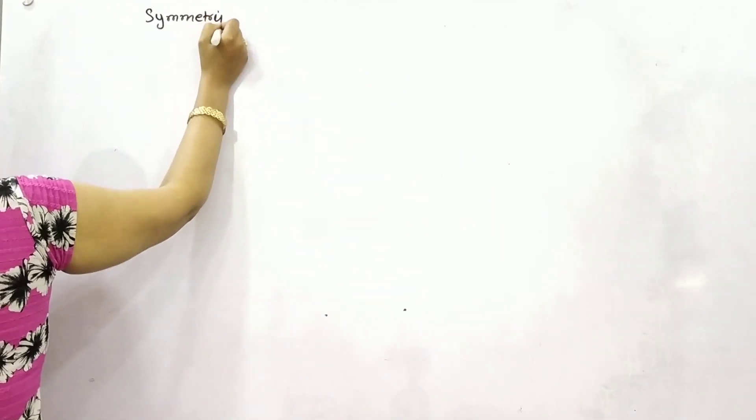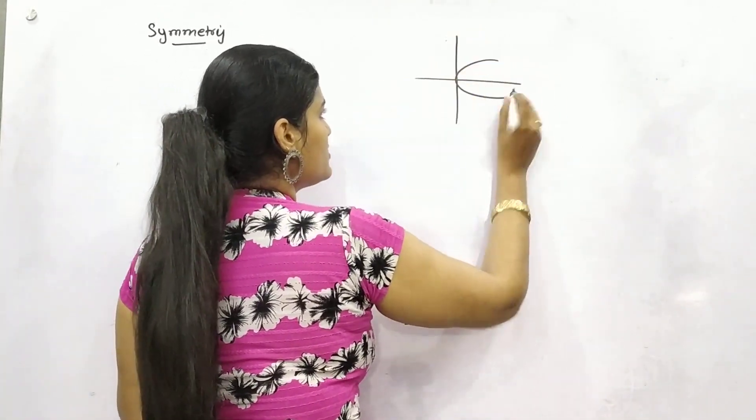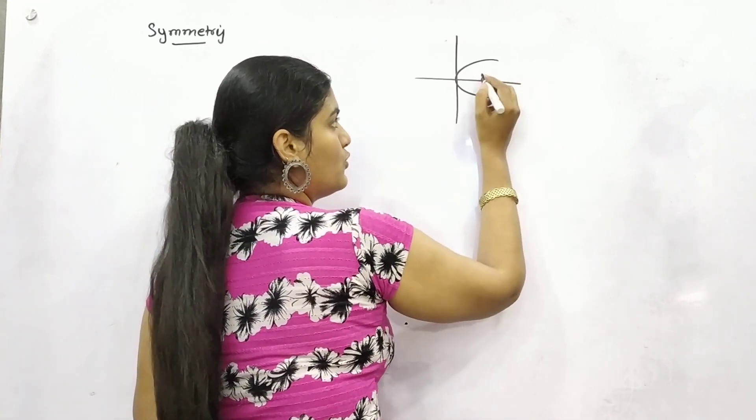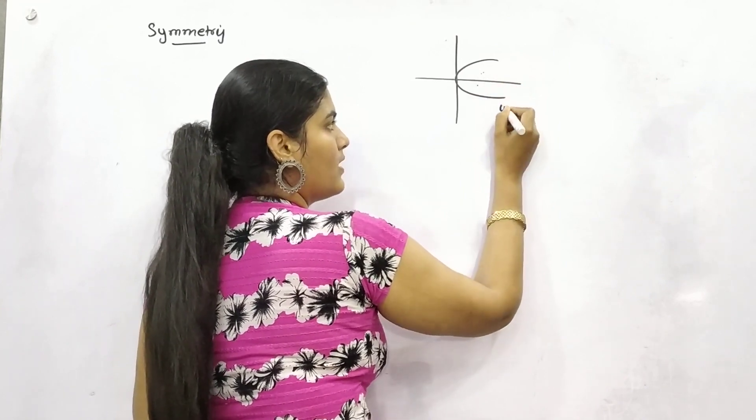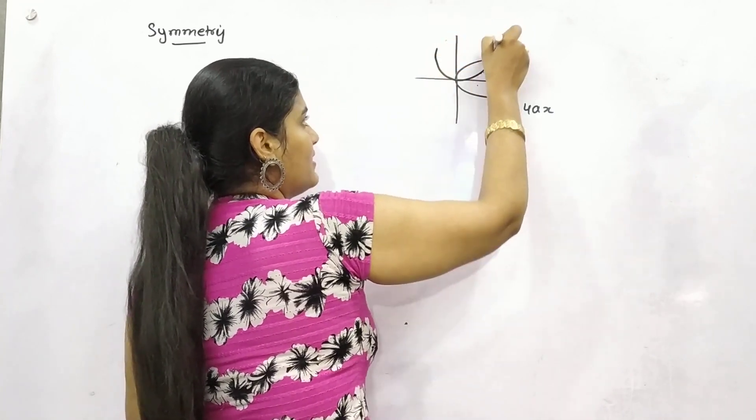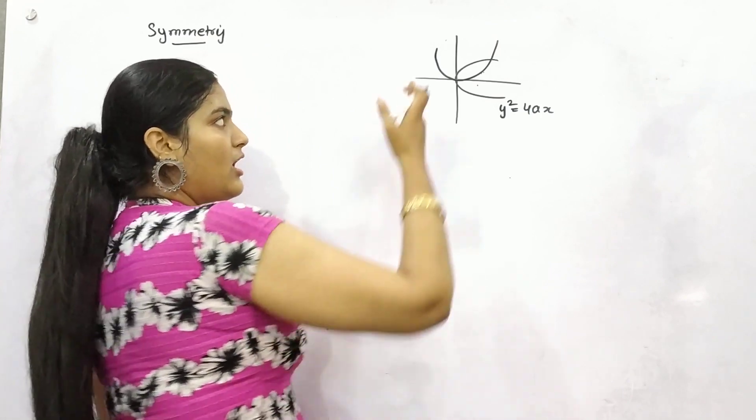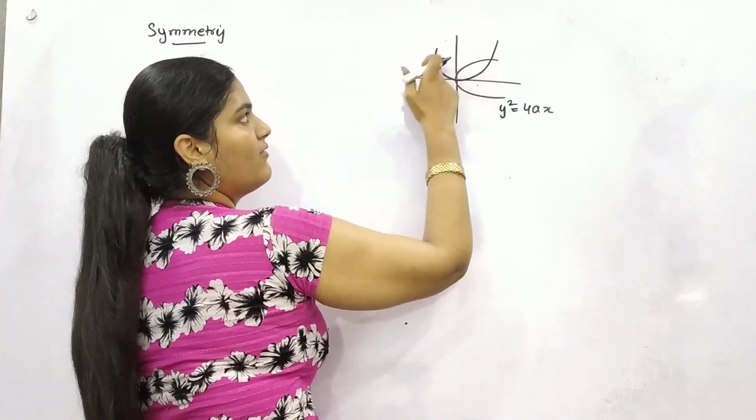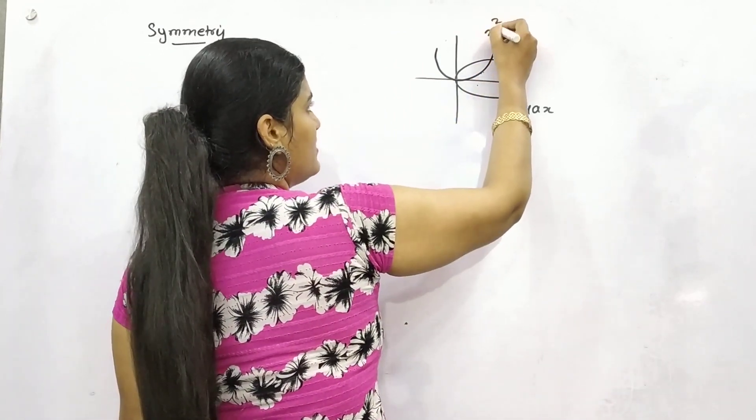For symmetry, as I told you, I'm giving you an example. This is your parabola. What's this equation? Because it is symmetrical to x-axis, it will be y² = 4ax. And this is symmetrical to y-axis - symmetry means if y-axis is your mirror, you will have both images the same. This is x² = 4ay.